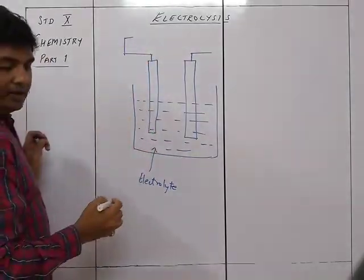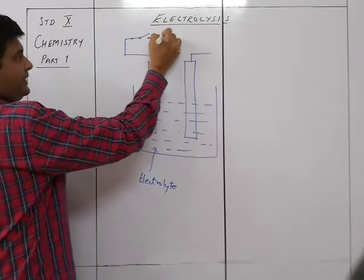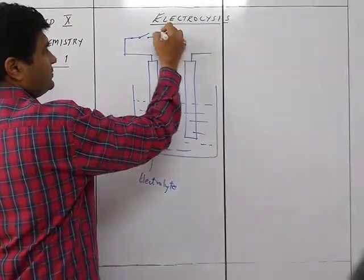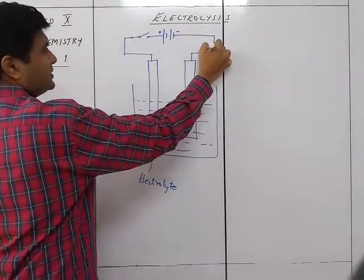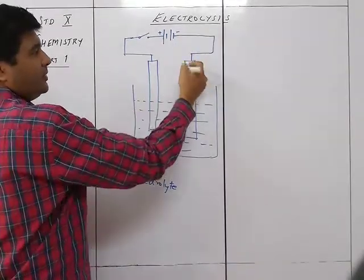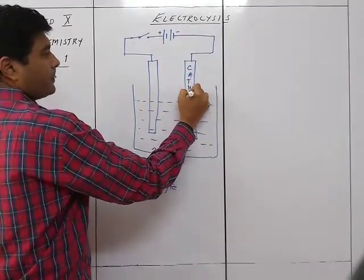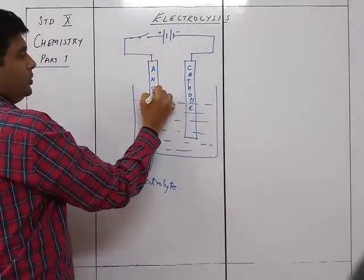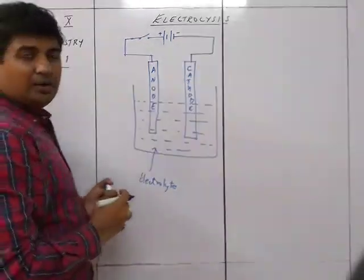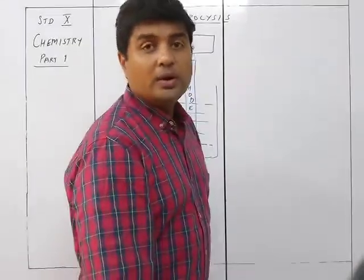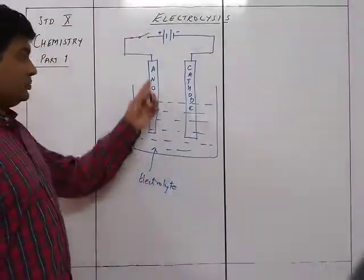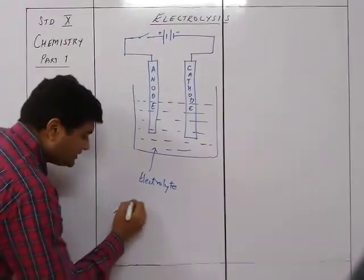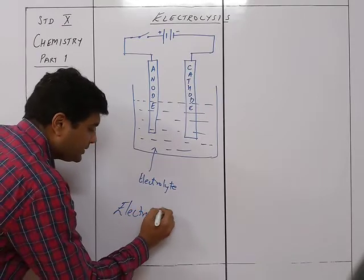These two rods are connected to the two terminals of a battery. The one connected to the negative terminal is called the cathode, and the one connected to the positive terminal is called the anode. Anode and cathode are the two kinds of electrodes of the electrolytic cell.